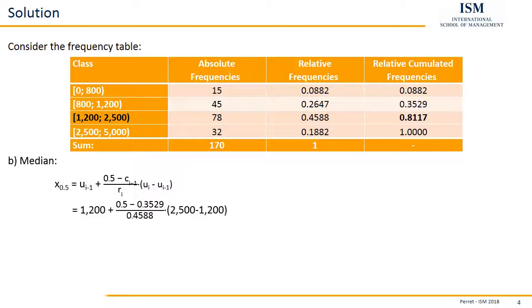So if we insert all those values, we get the following result. And we can input this into our calculator or any other way and get a final result for the median as 1,616.80. This then concludes the second part of this exercise.